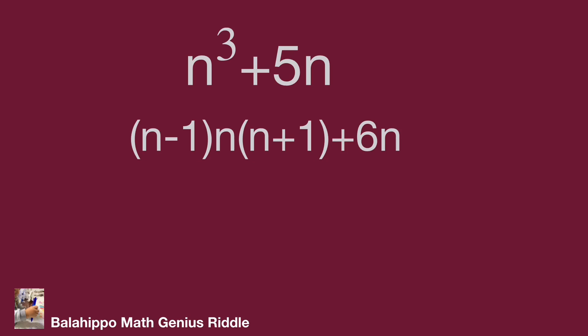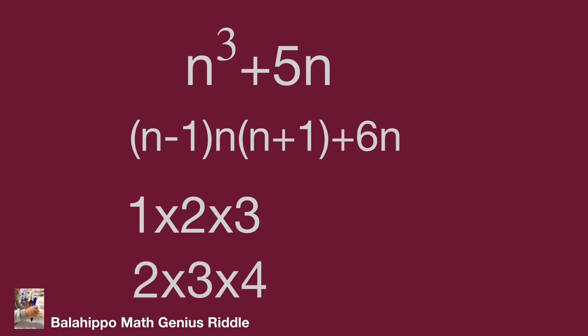The product (n-1) times n times (n+1) is a product of three consecutive integers, so it always includes factors of 2 and 3, making it divisible by 6. For example: 1×2×3, or 2×3×4, or 3×4×5 — all contain factors 2 and 3. Therefore both groups, n cubed minus n and 6n, are divisible by 6, which proves that n cubed plus 5n is divisible by 6.